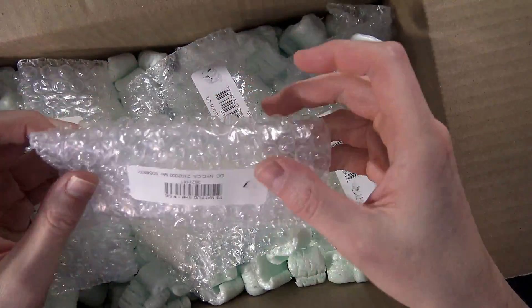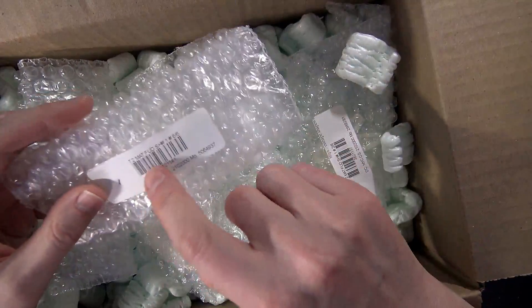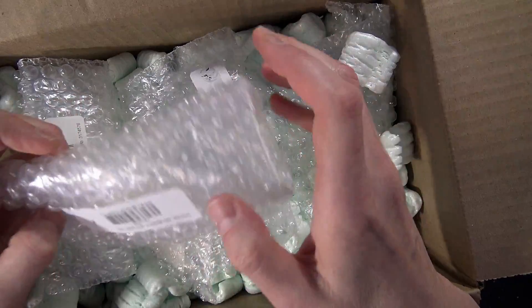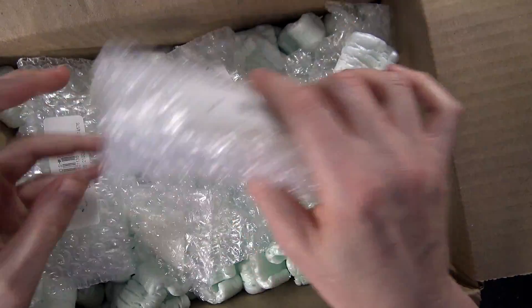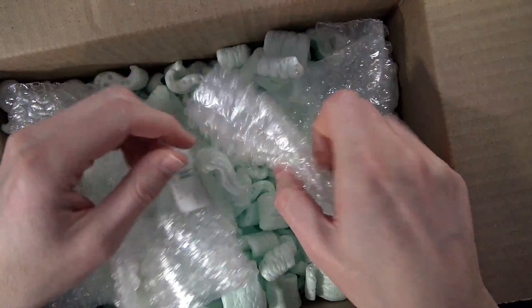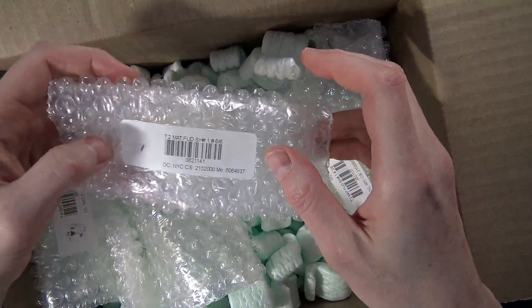You can see here that not only does Shapeways have the exact SKU number with a UPC printout, and also everything is packed inside a bubble wrap inside of peanuts inside a nice sturdy corrugated cardboard box. So I was definitely impressed there.